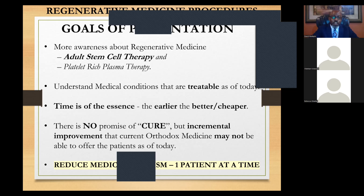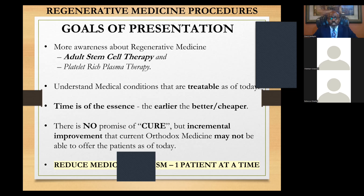We will cover adult stem cell therapy and platelet-rich plasma therapy — I will define those as we go. By the end of today's presentation we should understand what medical conditions are treatable as of today. Time is of essence when considering one of the procedures of regenerative medicine — the earlier the better, and the less expensive it is. Regenerative medicine works best for acute issues.